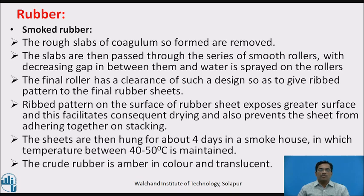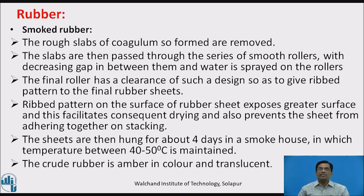The ribbed pattern on the surface of rubber sheets exposes greater surface area, which facilitates drying and also prevents the sheets from adhering together during stacking. The sheets are then hung for about 4 days in a smokehouse maintained at a temperature between 40 to 50 degrees Celsius. The crude rubber is amber in color and translucent.